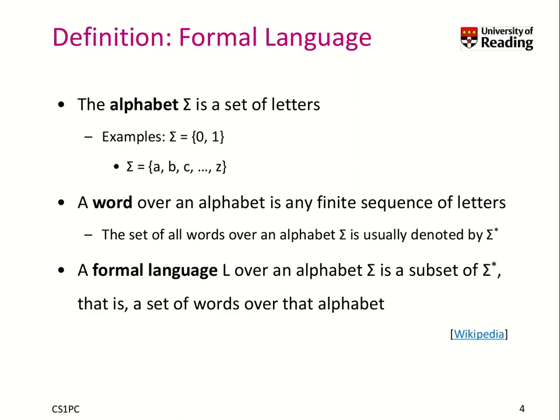Similar to the alphabet that you write, you can now form words over an alphabet by putting together those individual letters. A word, or a set of words over an alphabet sigma, is usually denoted as sigma star, where star indicates any number of repetitions of those letters. A formal language L over an alphabet sigma is a subset of sigma star — that is, it's a set of words over the alphabet.